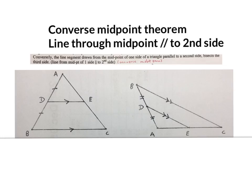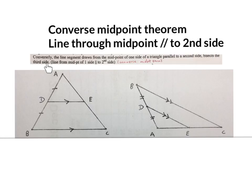Now we're going to discuss the converse of the midpoint theorem. Some people like to call it 'line through midpoint parallel to second side.' We're just going to call it the converse midpoint theorem. This states: the line segment drawn from the midpoint of one side of a triangle, parallel to a second side, bisects the third side. We can write this out in full or just call it 'converse midpoint theorem' abbreviated.